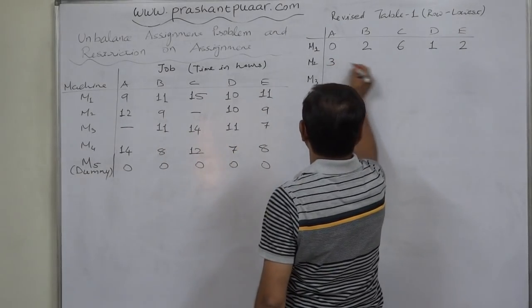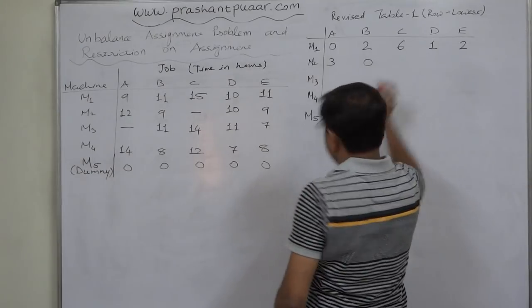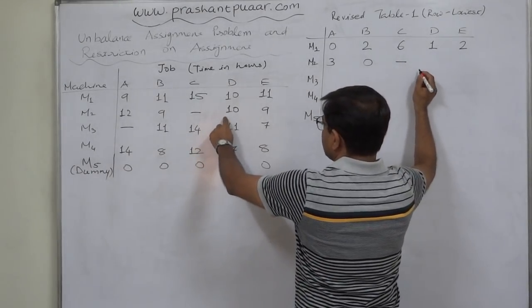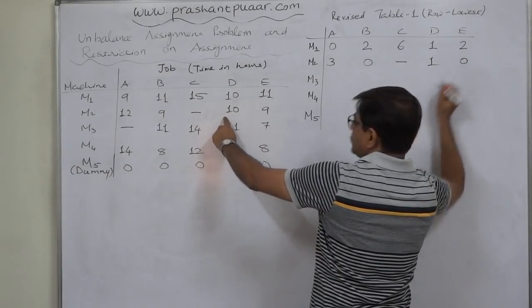12 minus 9, 3. 9 minus 9, 0. As it is, we are leaving this place as it is. 10 minus 9, 1. 9 minus 9, 0.